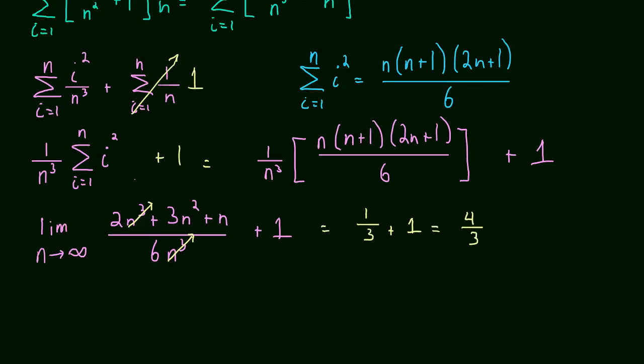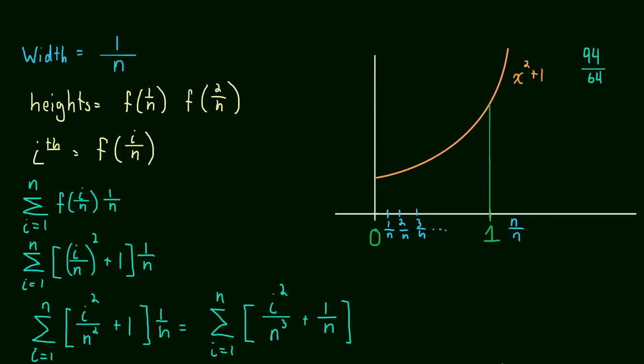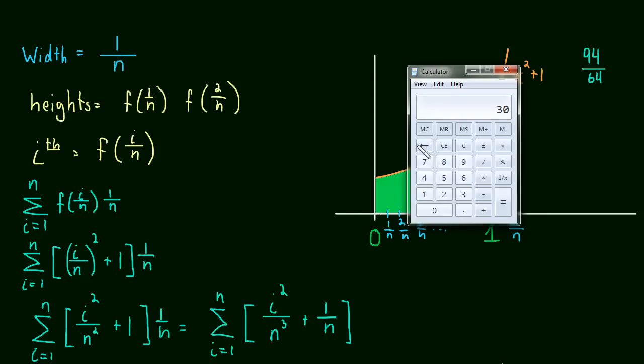And that is the exact area under the curve, which is really, really cool. This exact area here is 4 thirds. Now let's see how close we got. What is 4 thirds? It's 1.333, right? Or 1.333, right? 1.333.